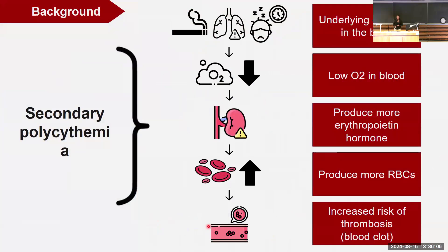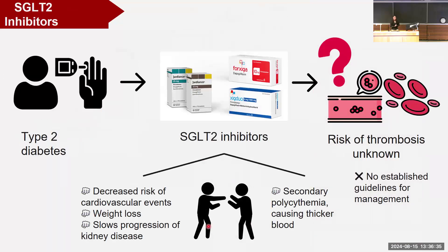Secondary polycythemia is often caused by conditions that deprive your tissues of oxygen, including tobacco smoking, obstructive sleep apnea, lung disease, or testosterone injections. As an adaptive response, specialized cells detect low blood oxygen levels and tell the kidneys to produce more erythropoietin hormone. This causes the bone marrow to produce more red blood cells, making the blood thicker and putting you at higher risk of a blood clot. But this pipeline is less clear if secondary polycythemia is caused by SGLT2 inhibitors, because this medication has characteristics that both cause and prevent thrombosis.